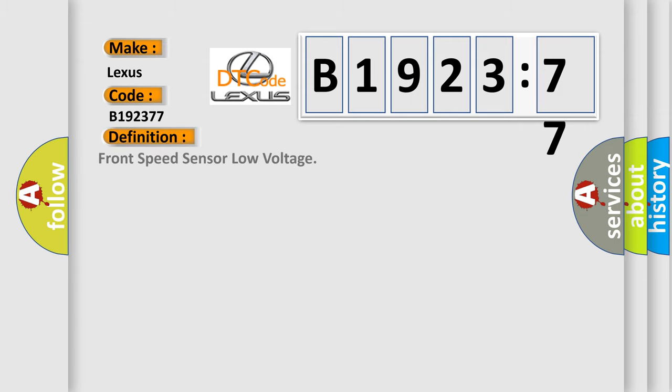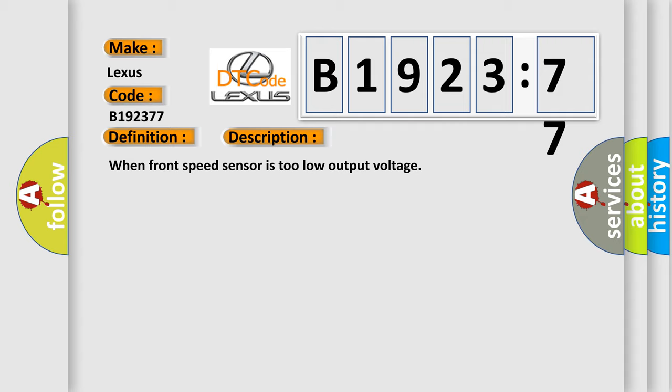B192377. Interpret specifically, Lexus car manufacturers. The basic definition is front speed sensor low voltage.